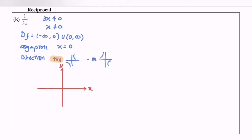So now I'm going to sketch the graph. By referring to the domain, x equals to 0 is the asymptote, so here will be the location of x equals to 0. At the same time, do remember y equals to 0 also as asymptote. So by referring to the direction, it is positive, so our graph will be like this.